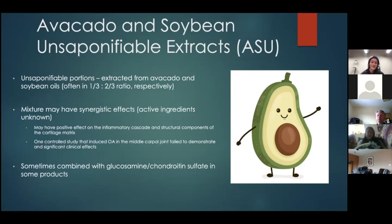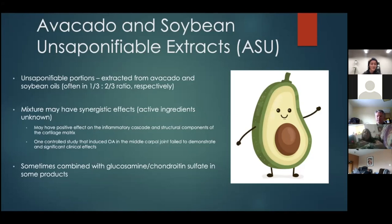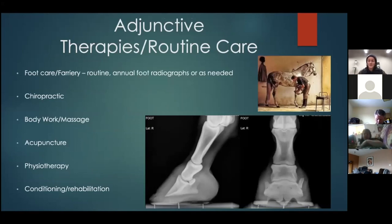ASUs may have positive effects on the inflammatory cascade and structural components of the cartilage matrix. However, a controlled study that caused osteoarthritis in one of the middle joints of the carpus (knee) in horses failed to demonstrate a significant clinical effect, so the verdict is still out. ASUs are sometimes combined with glucosamine and chondroitin sulfate in some products.